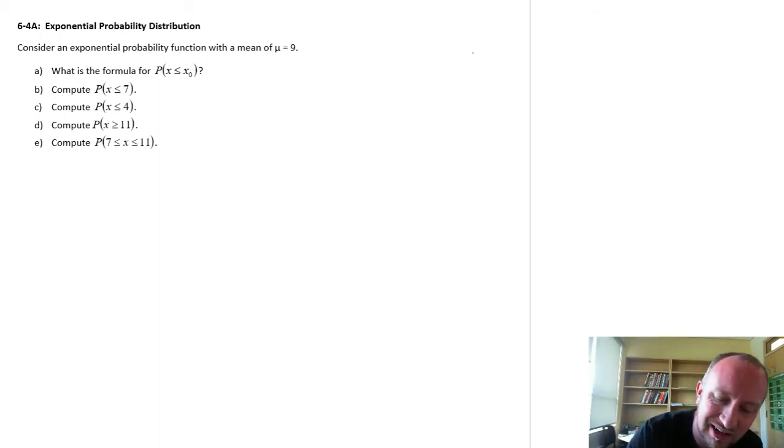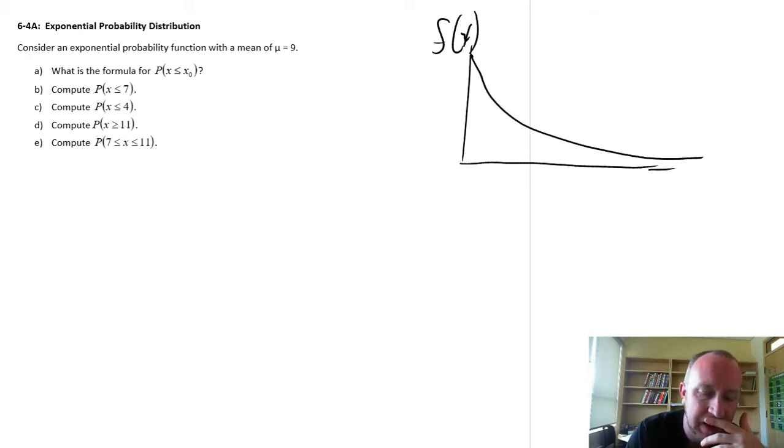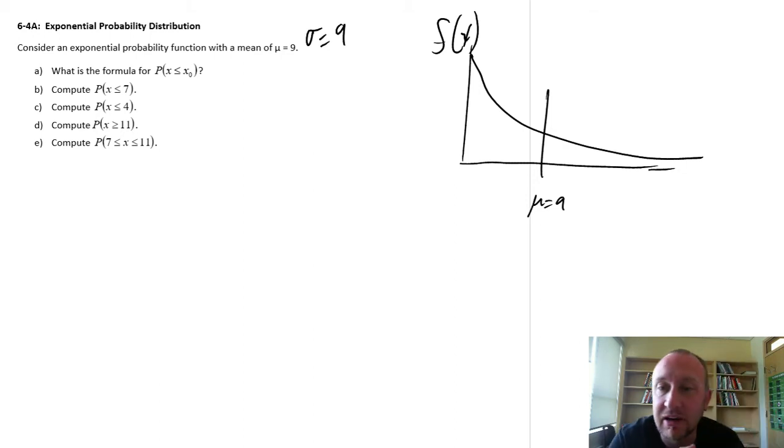So here's our distribution, here's our density function. It looks something like this. We have a mean of 9, so let's say that mean is somewhere around here. Just like the Poisson distribution, the mean and the standard deviation are the same. So if I have a mean of 9, I have a standard deviation of 9.